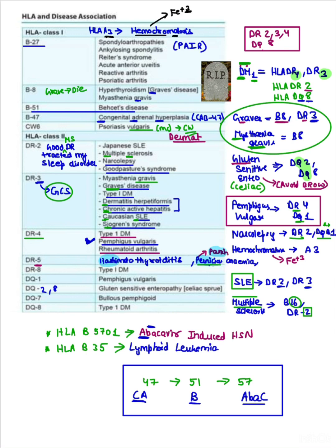Now coming to HLA-B27. Remember the mnemonic PAIR: P for psoriatic arthritis, A for ankylosing spondylitis where you have history of back pain and Schober test positive. Psoriatic arthritis where you can have pencil-in-cup deformity on X-ray.